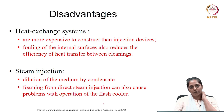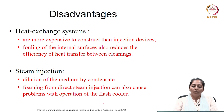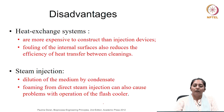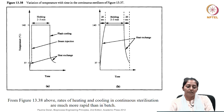To compare the two types of continuous sterilization equipment, let us see the merits and demerits associated with them. A heat exchange system is going to be more expensive to construct rather than direct steam injection, where fouling of the internal surfaces also reduces the efficiency of heat transfer between cleanings. In case of steam injection, dilution of the medium by the condensate can happen, which may account to 10 to 20 percent of the volume. Foaming because of direct steam injection can also cause problems with the operation of the flash cooler. Looking at the temperature-time profile shown here for continuous sterilizers, you can see that compared with batch, the heating and cooling is almost instantaneous and the holding time is comparatively higher.